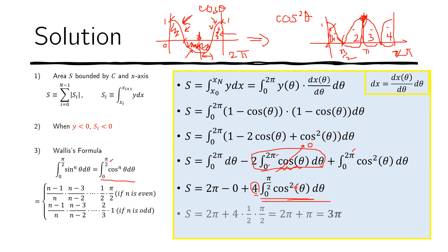Now we apply Wallis formula. We have 2π from the first term, and then 4 times the Wallis integral. Since the exponent n = 2 is even, we start with 2 in the denominator and subtract 1 to get 1 in the numerator — that's the last term — giving us 1/2. Then we multiply by π/2. So 4 × (1/2) × (π/2) = π, and adding 2π gives us a total area S = 3π. If you learned something new today, please help my channel by clicking the subscribe button and the bell for notifications. See ya!